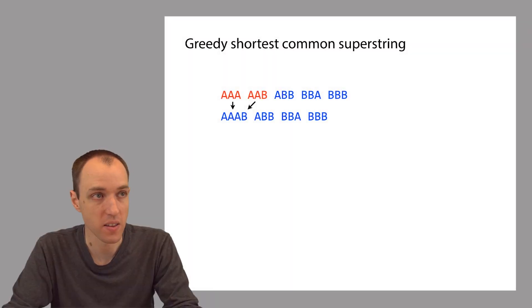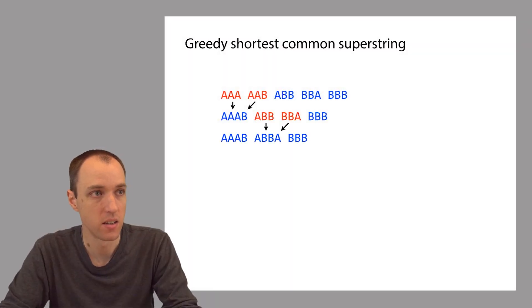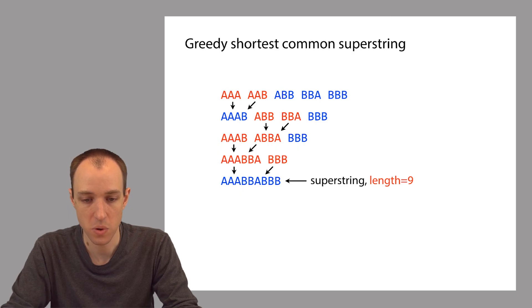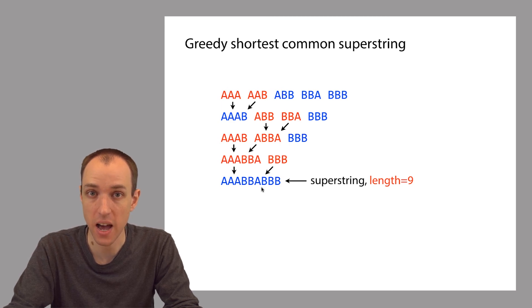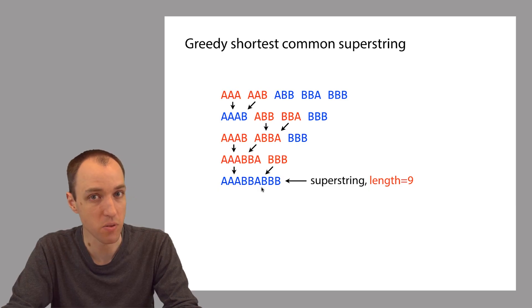If we repeat this process again and again, until we get to the end of the algorithm, we get to this answer. This is the result of the greedy shortest common superstring algorithm in this case. There were ties along the way, cases where we had a tie in terms of which nodes we could glue together, in terms of which overlaps had greatest weight. We broke them in a certain way, and it's a little bit different from the way we broke the ties before.